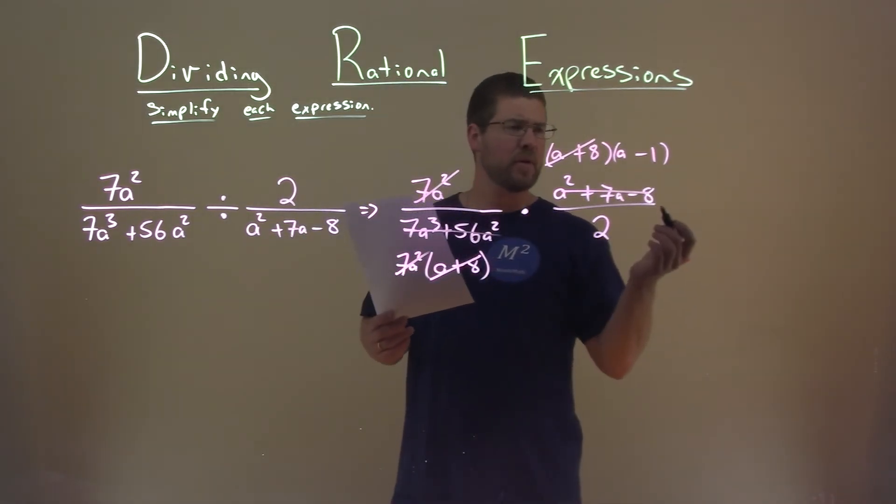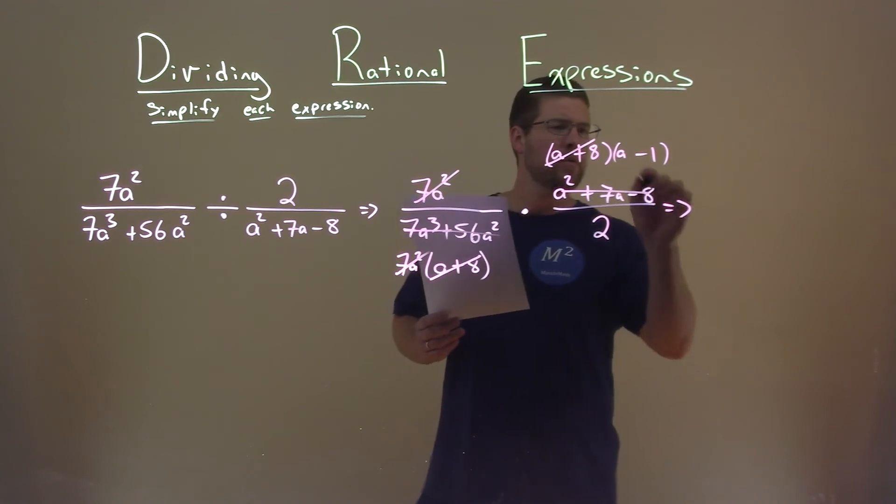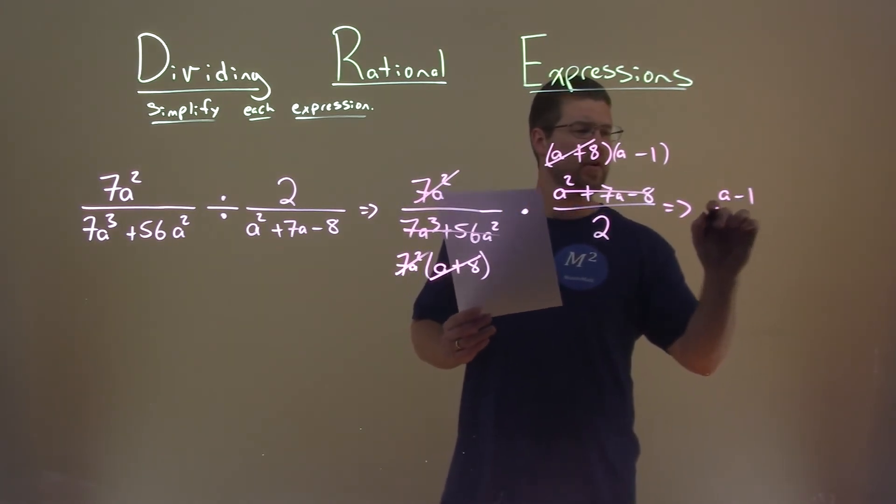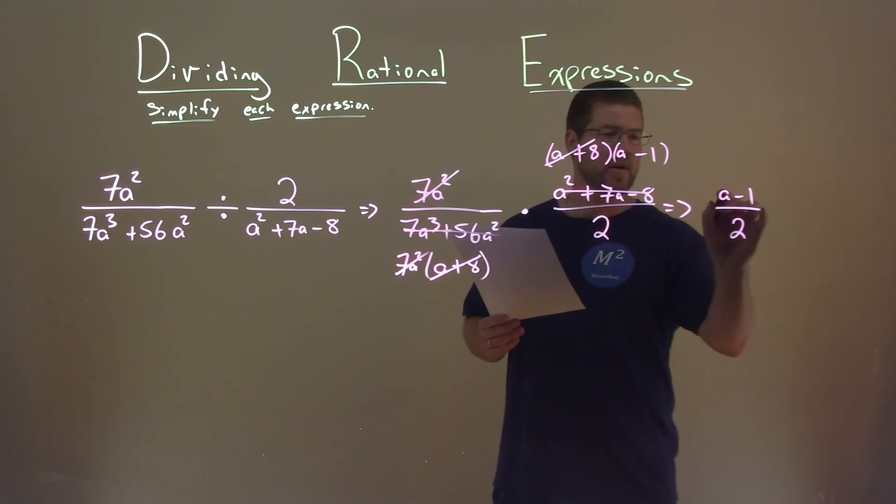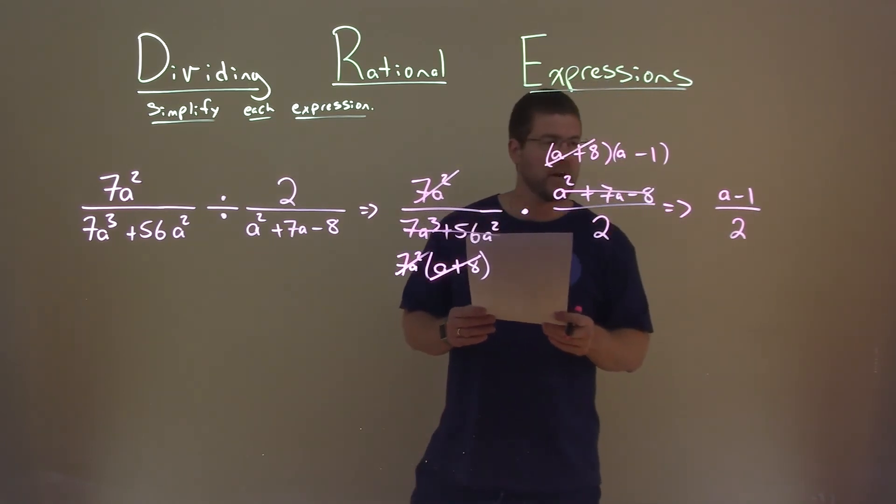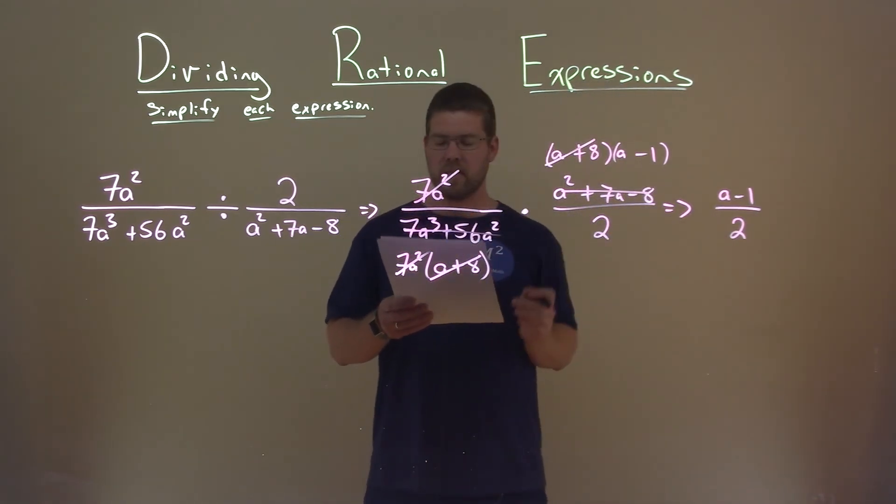So what are we left with? Well, the numerator, we have an a minus 1 left over, and the denominator, we just have a 2. So a minus 1 divided by 2 is our final answer.